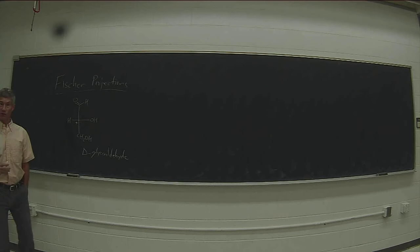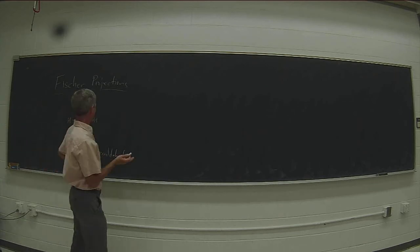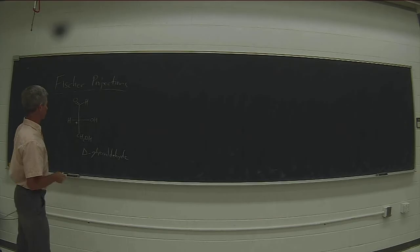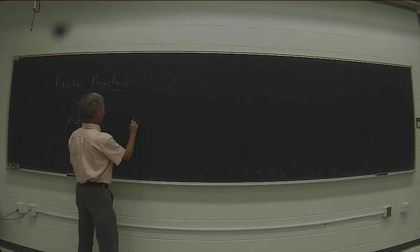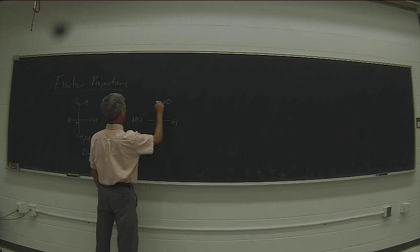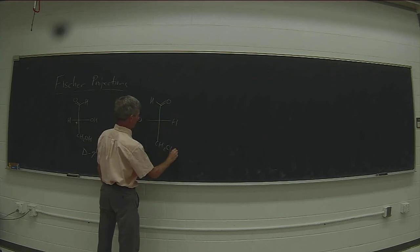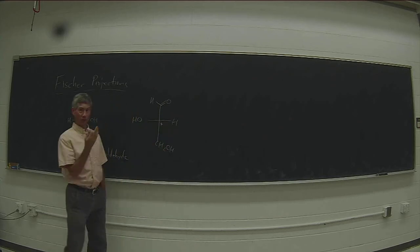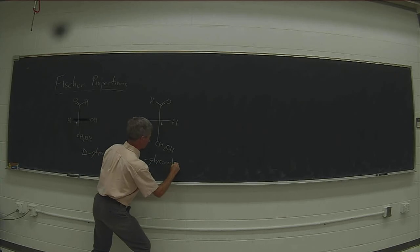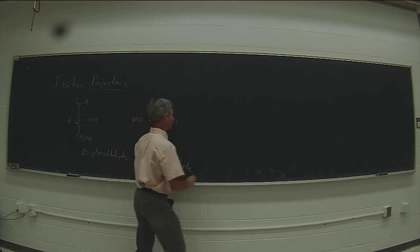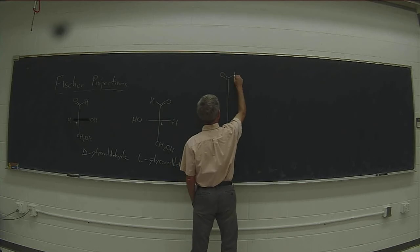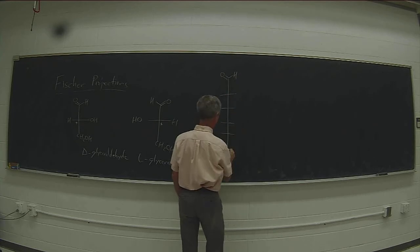But I didn't actually tell you what a Fischer projection was and explain how you can use a Fischer projection to go back to a dashed wedge structure. A Fischer projection is a way of drawing a molecule so that everything is in the plane, which obscures the chirocenter but makes it neater when you're writing molecules that have more chirocenters, like glucose, for example,